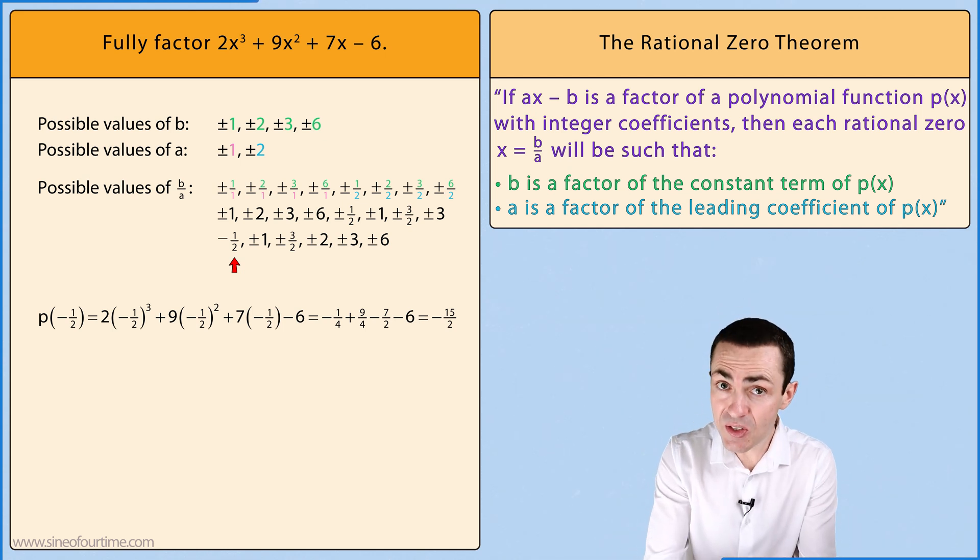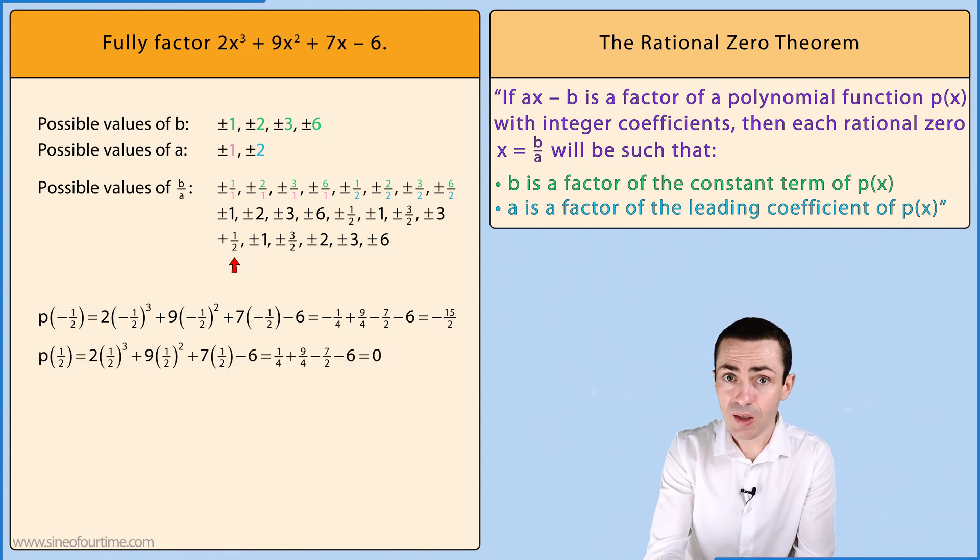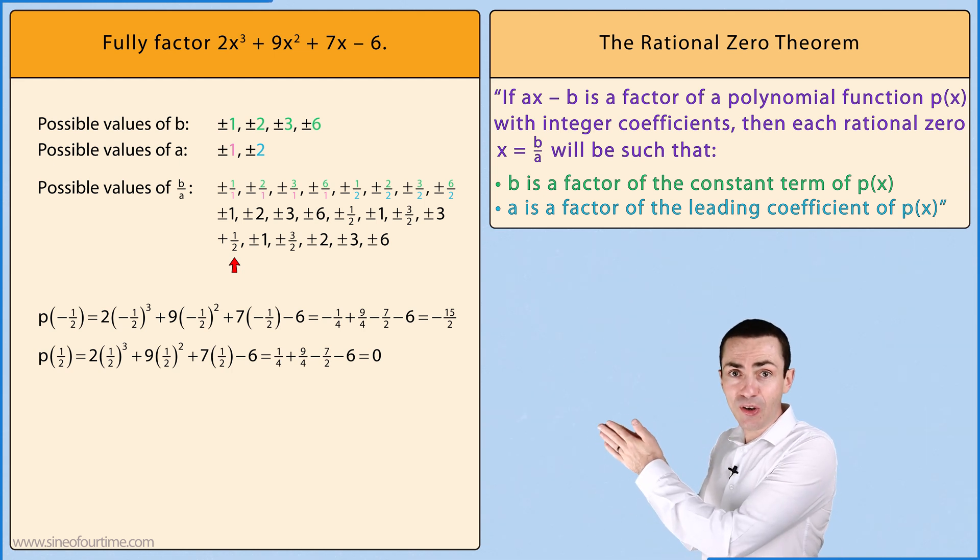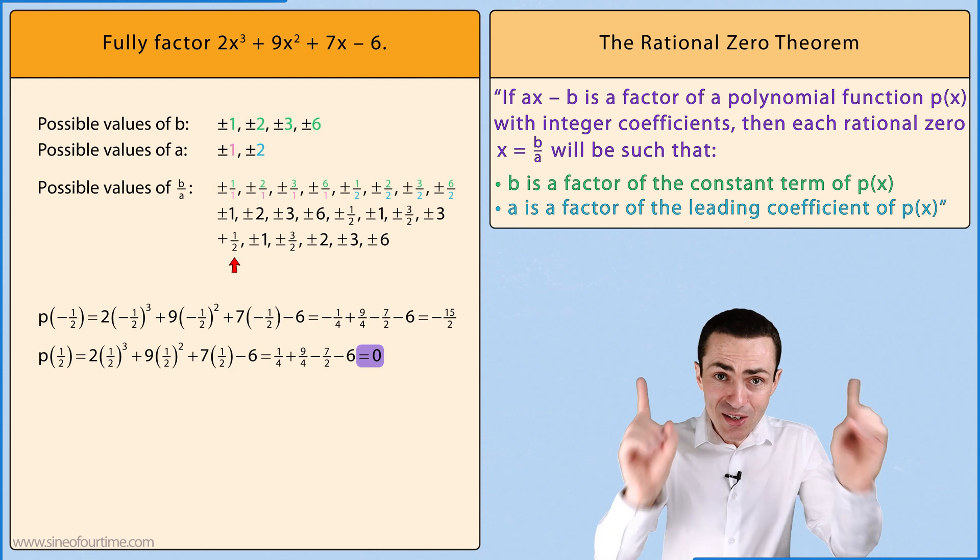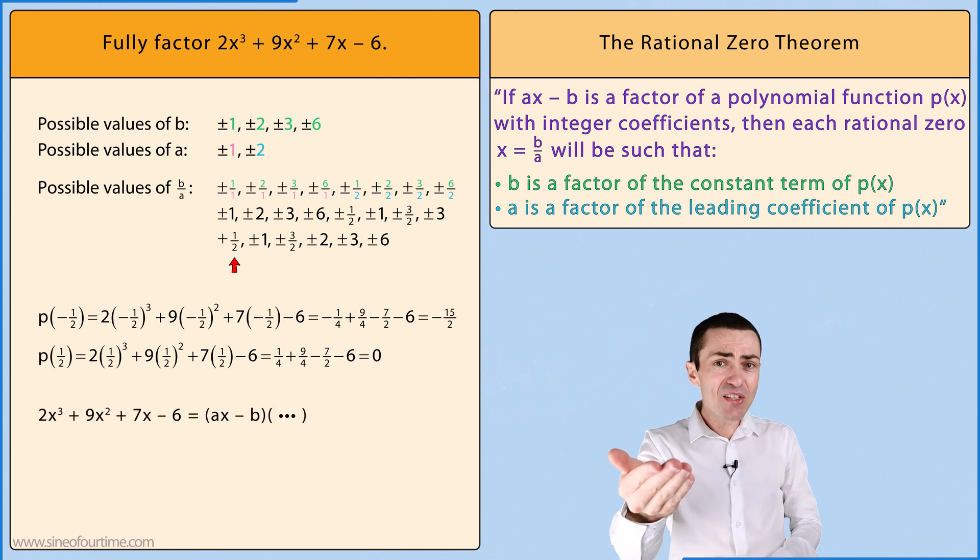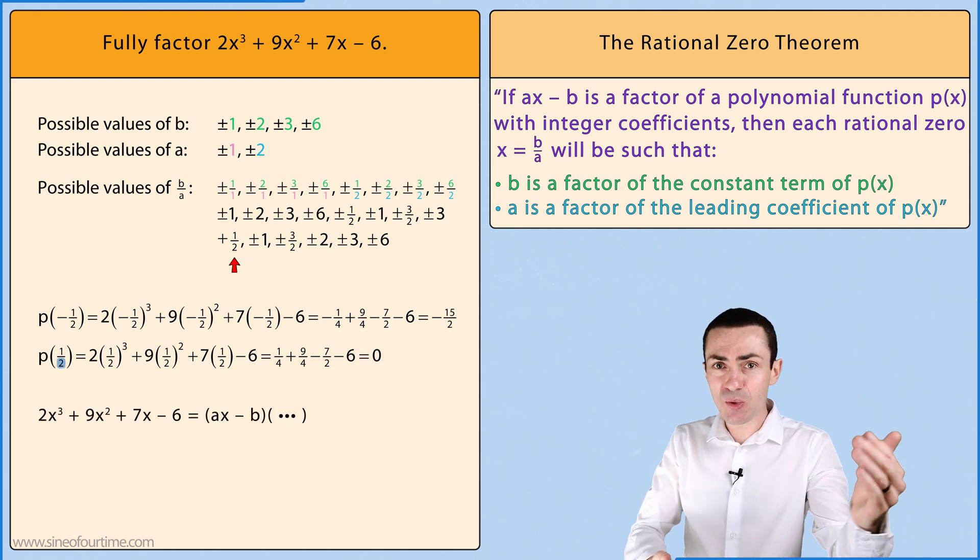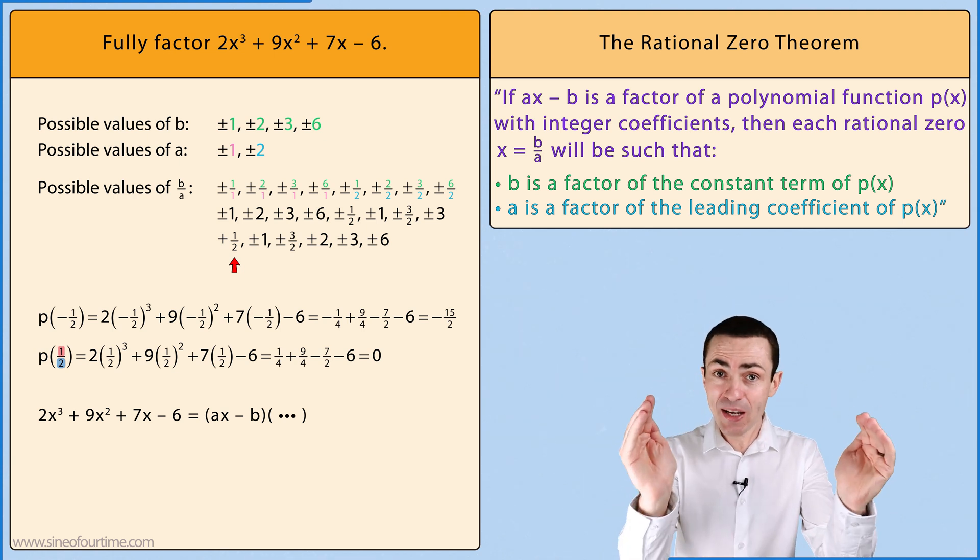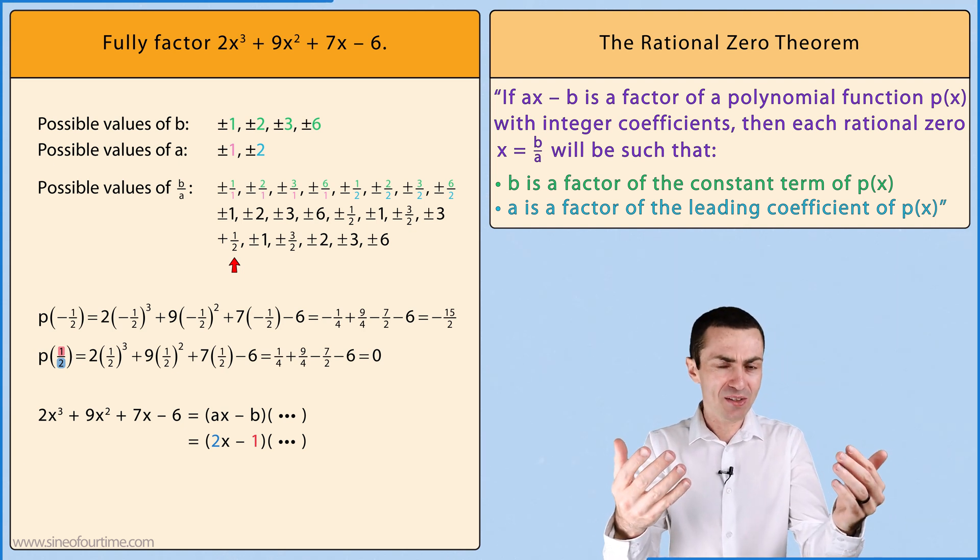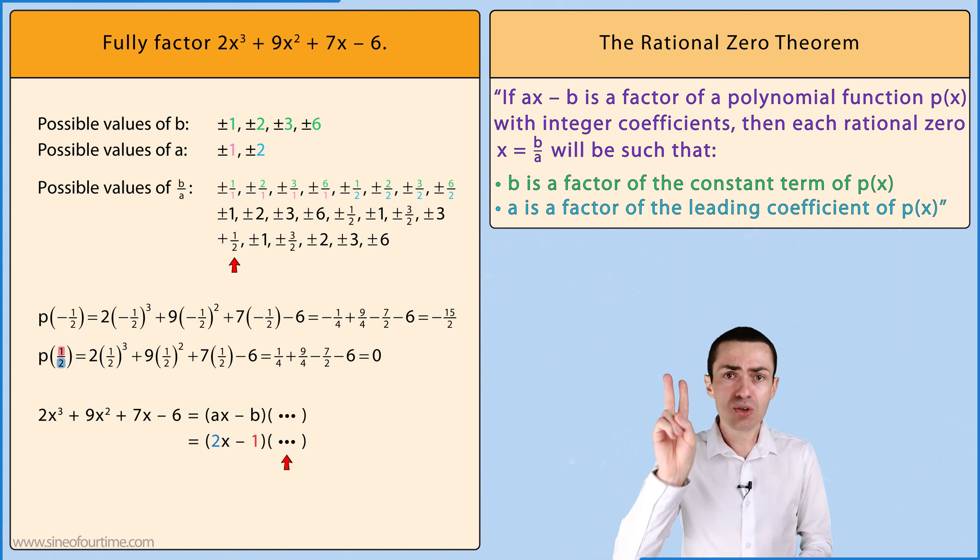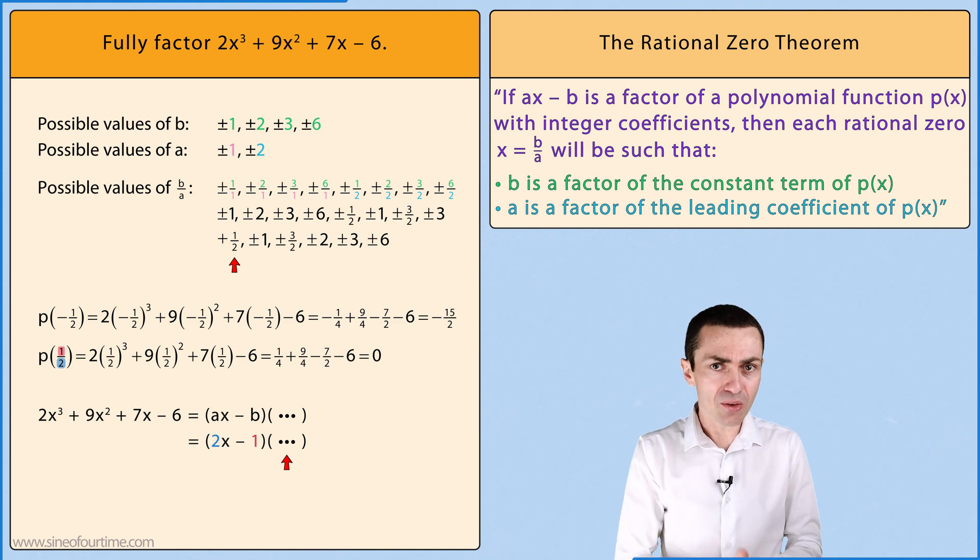Let's move on to positive 1/2 which does make the polynomial function equal to zero, which tells us that positive 1/2 is a rational zero. In other words a = 2 and b = 1, meaning that 2x - 1 is a factor of this polynomial. But what about the other factor or factors? Well there are two strategies in order to find out what these are.